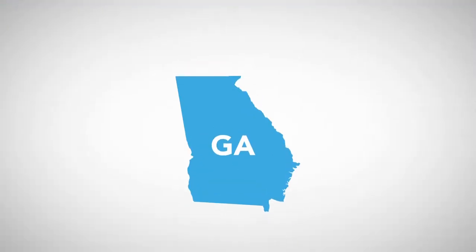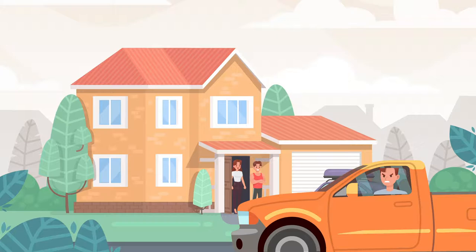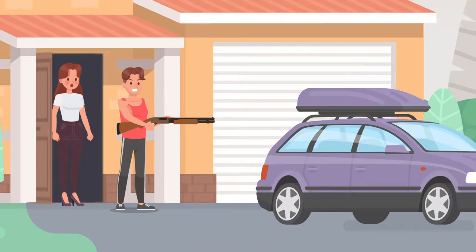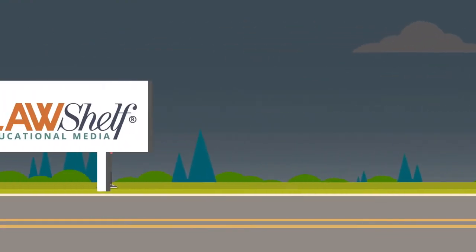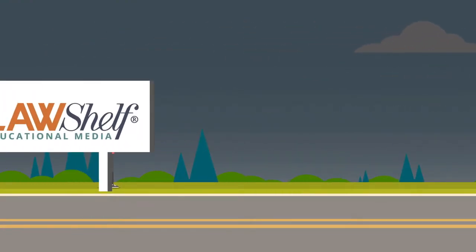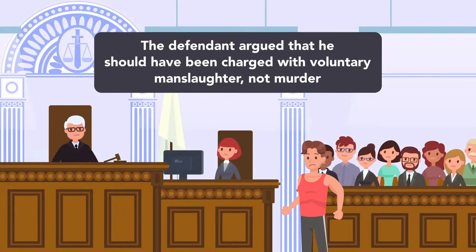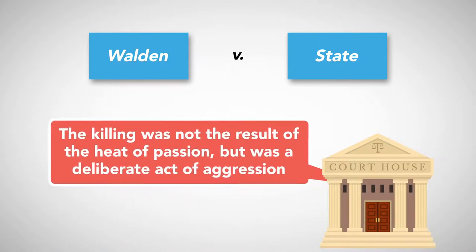For example, in the Georgia case Walden v. State, the ex-boyfriend of the defendant's girlfriend followed her to the defendant's home and pulled his car into the defendant's driveway. He got into a heated argument with the defendant. The defendant retrieved a weapon from inside the house and the ex-boyfriend drove away. The defendant followed the ex-boyfriend for some time on foot and hid behind a sign. When the ex-boyfriend drove past, the defendant fired two shots into the vehicle, killing the ex-boyfriend. The defendant argued that he should have been charged with voluntary manslaughter, not murder. The court held, though, that because a sufficient cooling-off period took place before the defendant killed the ex-boyfriend, the killing was not the result of heat of passion, but was a deliberate act of aggression supporting a charge of murder.